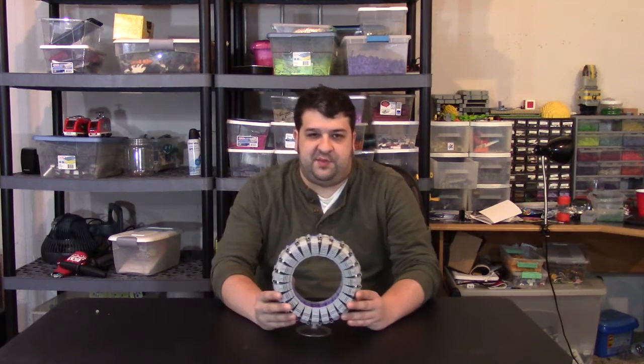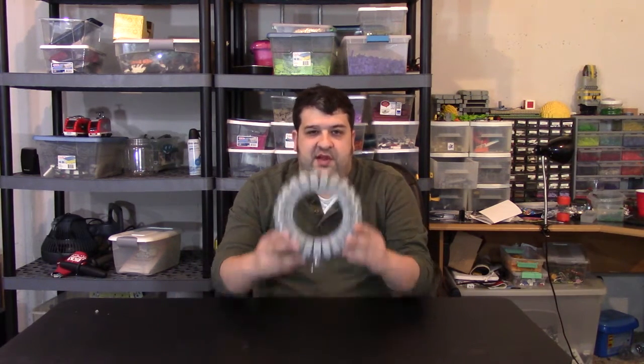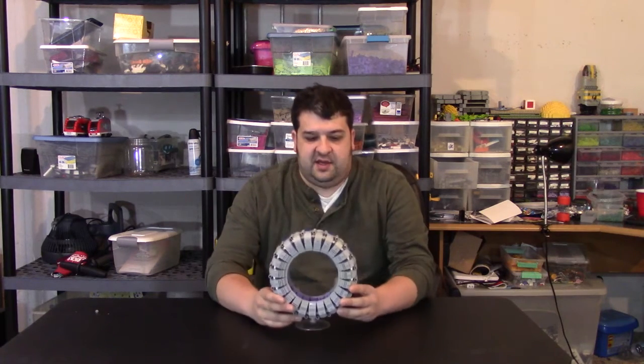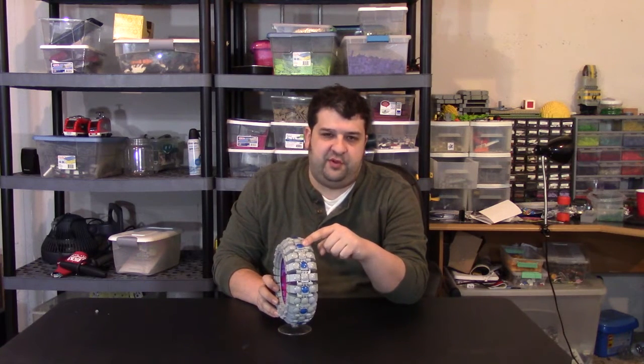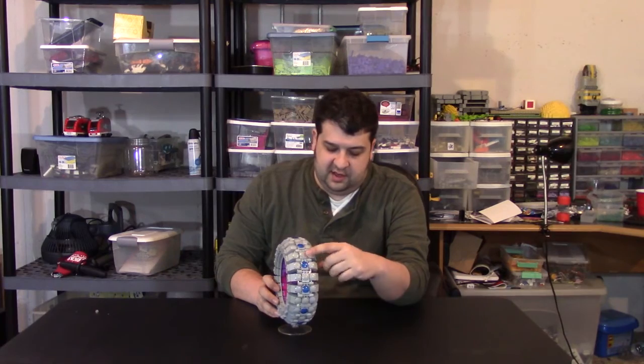So we're going to show you how to build it. There are some things to know before we get underway. The ring consists of 23 identical segments, so we're only going to show you how to build one of them. There are a few differences between the segments. As you can see, some of them we put the trans blue in, some of them we just used gray.